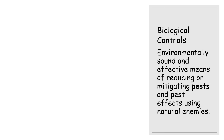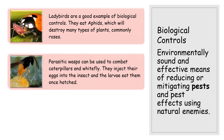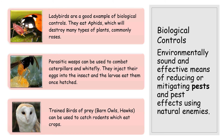A more natural way of managing pests is biological controls — environmentally sound, chemical-free methods using natural enemies. For example, ladybirds eat aphids or greenfly, which can destroy crops like roses or soft fruit. Parasitic wasps combat caterpillars and whitefly by injecting their eggs into the insect; the larvae then eat their way out once hatched. Birds of prey such as barn owls or hawks can also be used to catch rodents that eat crops.